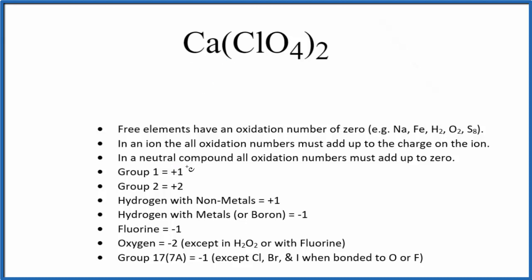Next, when we look at the calcium, calcium's in group two on the periodic table, so it's going to be plus two. In ClO4, that's the perchlorate ion. You could memorize that the perchlorate ion has an ionic charge of one minus.